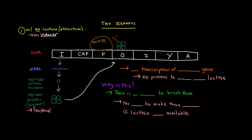RNA polymerase is physically blocked by the repressor protein. RNA polymerase would normally transcribe Z, Y, and A — the genes that break down and use lactose for energy — but the repressor protein is bound, so it won't. There is no transcription of the structural genes in this case. Z, Y, and A are not going to be transcribed, and if they're not transcribed, they won't be translated either. So we have no proteins to break down lactose.